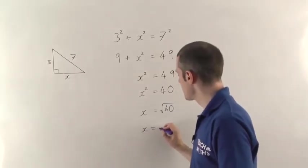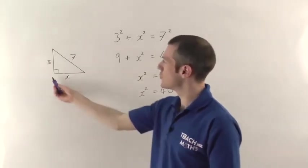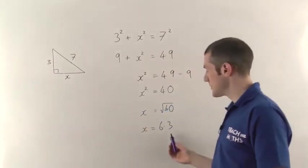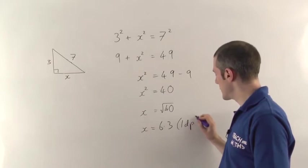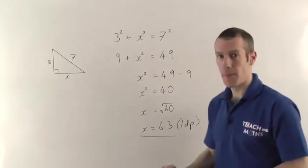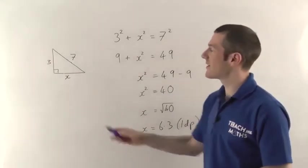So this time, the length of the shorter side here needs to be 6.3 centimetres. Again, I've rounded that to one decimal place. Alright, so that's how you find out the length of the shorter side.